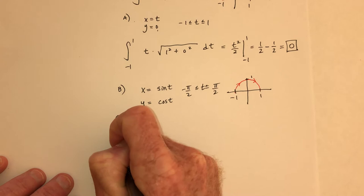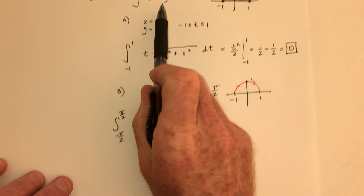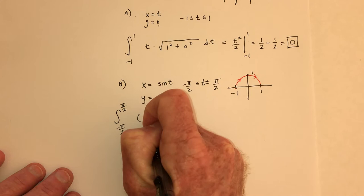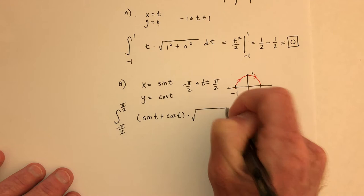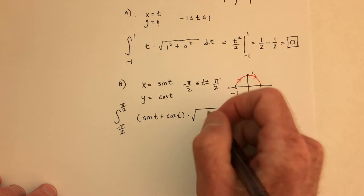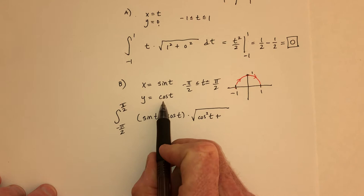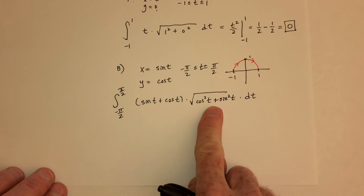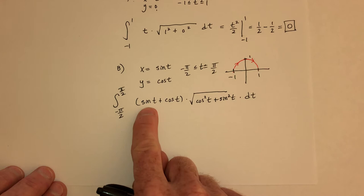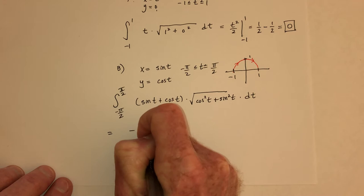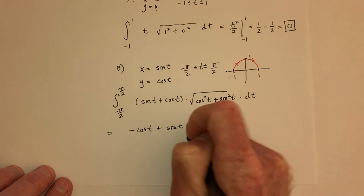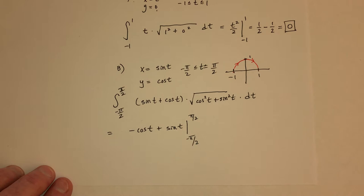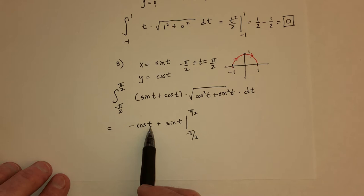Integrate from −π/2 to π/2. The function x + y becomes sin(t) + cos(t). For arc length, the derivative of sin(t) is cos(t), squared gives cos²t; the derivative of cos(t) is −sin(t), squared gives sin²t. So sin²t + cos²t = 1 under the square root equals 1. We just need the antiderivatives: antiderivative of sin(t) is −cos(t), antiderivative of cos(t) is sin(t), evaluated from −π/2 to π/2.